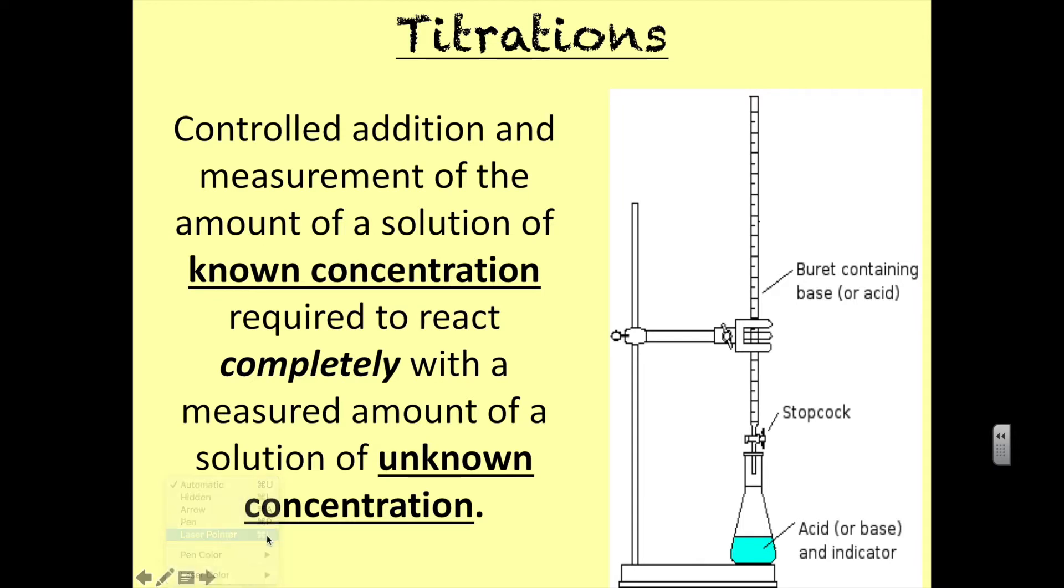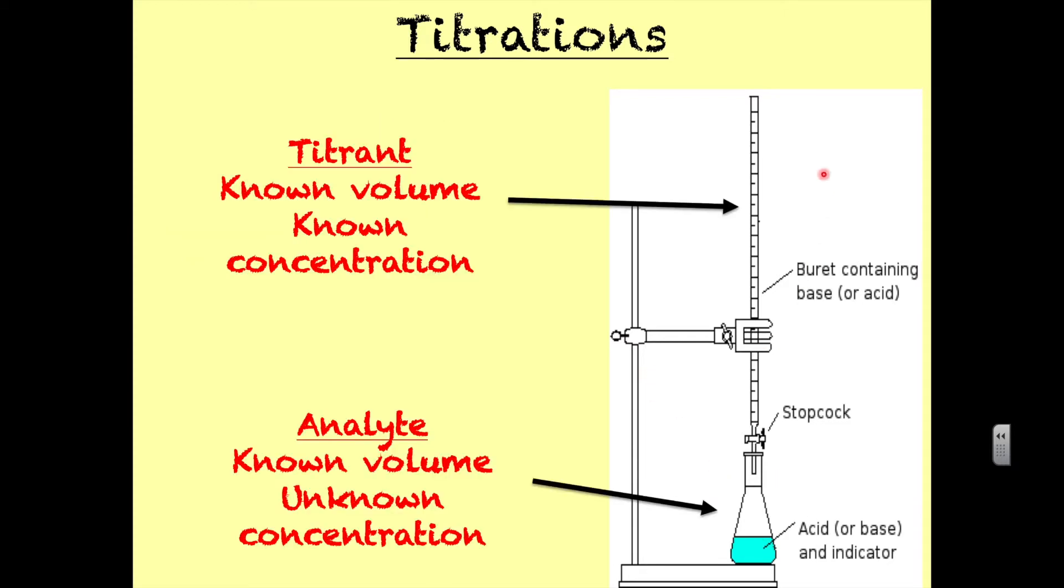It starts with the idea to determine the concentration of this right here. We know the volume because we can measure it in a graduated cylinder. The burette has markings so we can measure the volume in a burette, and we also know the concentration of what we put into our burette. If we know the volume and concentration of a base, then we can determine the concentration of an acid, or vice versa.